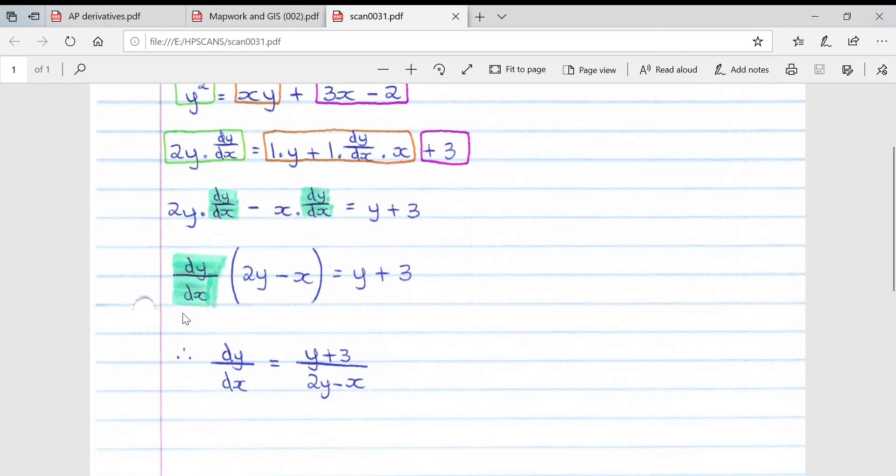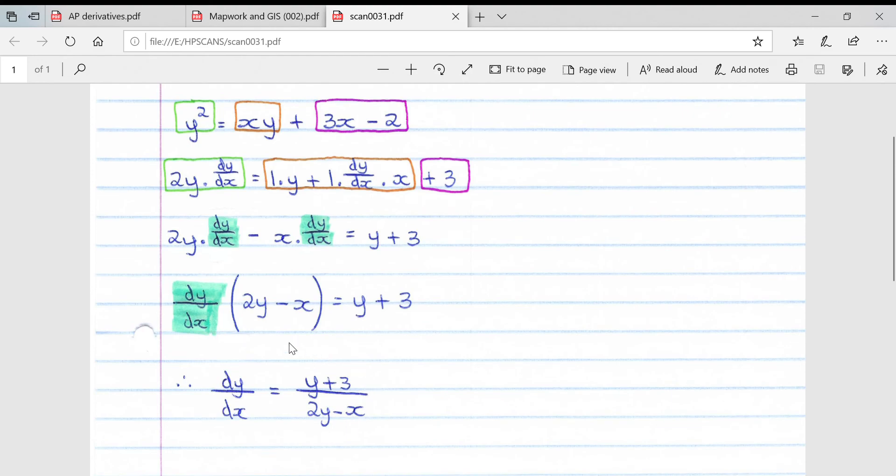Now we are used to the notation of dy over dx representing the derivative, so now we want to get that by itself. We simply say dy over dx equals y plus 3, and then we take that across and divide it, divided by 2y minus x.